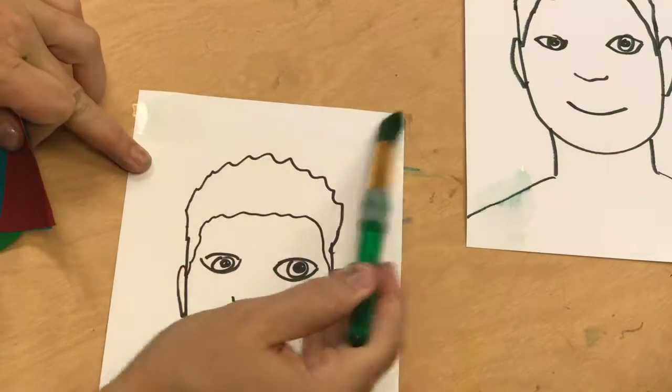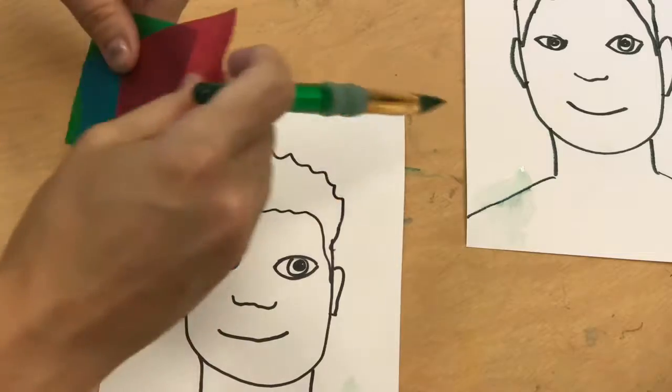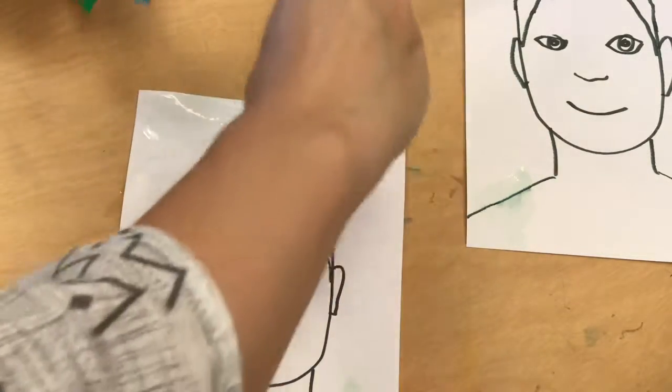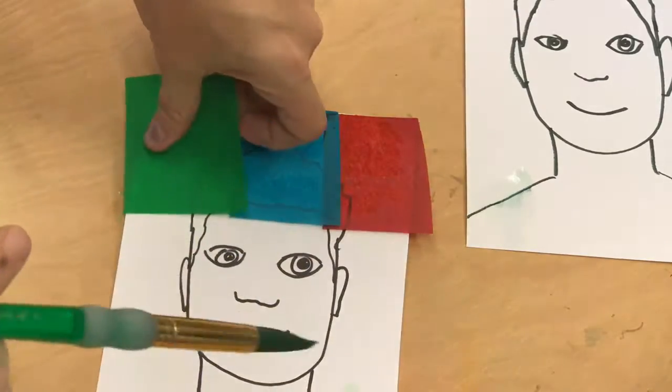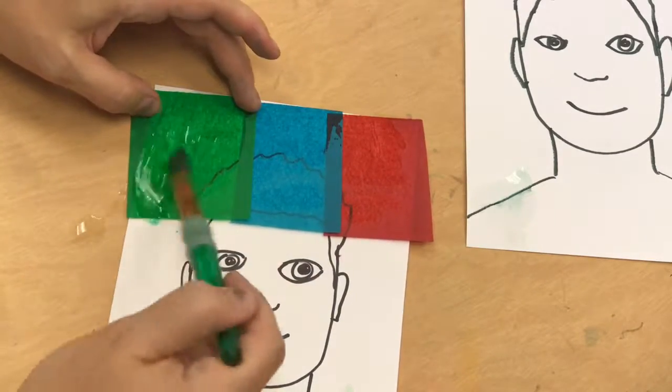But the Crayola marker is bleeding and it's funny because we used a colorfast marker for our art. Hopefully you didn't use the wrong one. But we're gonna use bleeding tissue to add a color to our art.